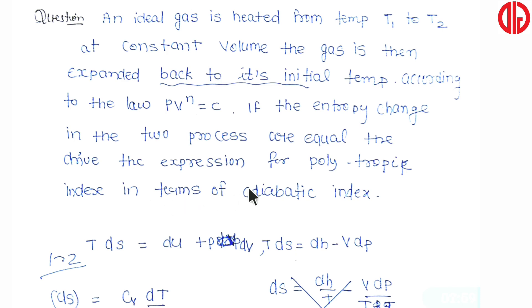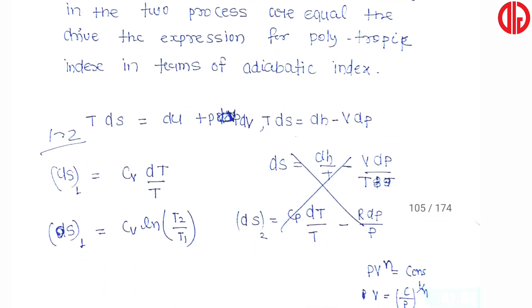If the entropy change in the two processes are equal, then derive the expression for polytropic index in terms of adiabatic index. The polytropic index is basically n and the adiabatic index is basically gamma. So here we have to derive a relation between polytropic index n and adiabatic index gamma. So first, when we are heating the gas at constant volume, we can find the entropy change.